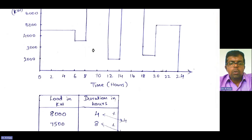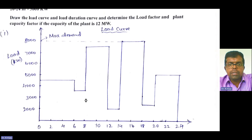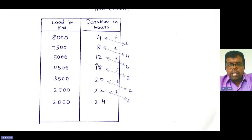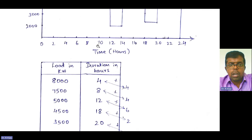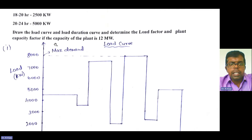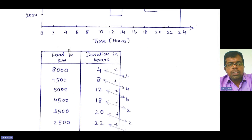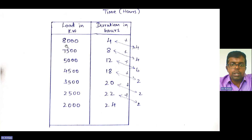Now we need to draw the load duration curve as well. For the load duration curve, you first need to sort the loads in kilowatts from descending order — from the highest to the lowest kilowatt.